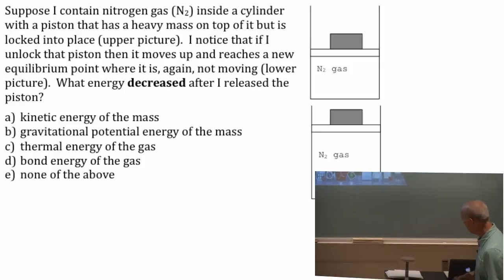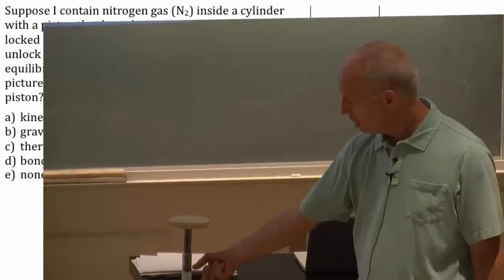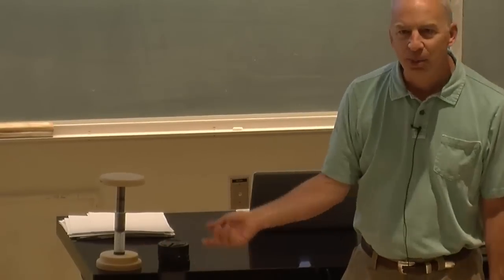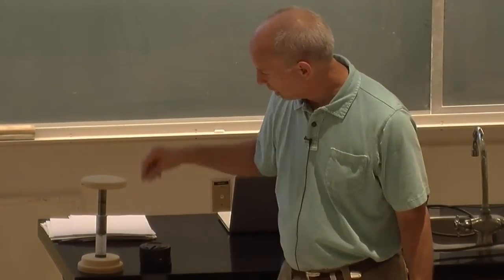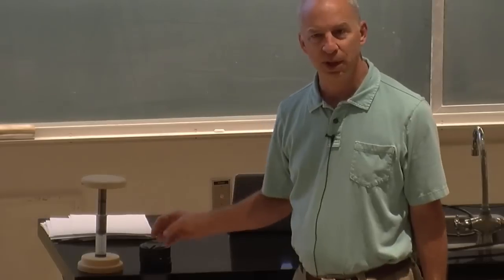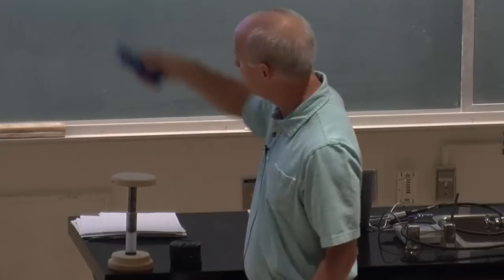Suppose nitrogen gas is inside a cylinder, so there's a syringe. It is a gas inside, it's air, but that's mostly nitrogen. And there's a piston that moves up and down, this movable part in the syringe is in fact just that piston right there.